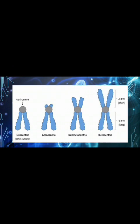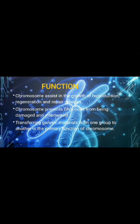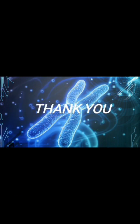The metacentric chromosome contains a P arm and a Q arm, where P arm indicates the short one and Q arm indicates the long one. Functions of chromosomes: chromosomes assist in the growth, reproduction, regeneration, and repair processes. Chromosomes prevent the DNA coil from being damaged and intertwined. Transferring of genetic material from one group to another is the primary function of the chromosome. Thank you.